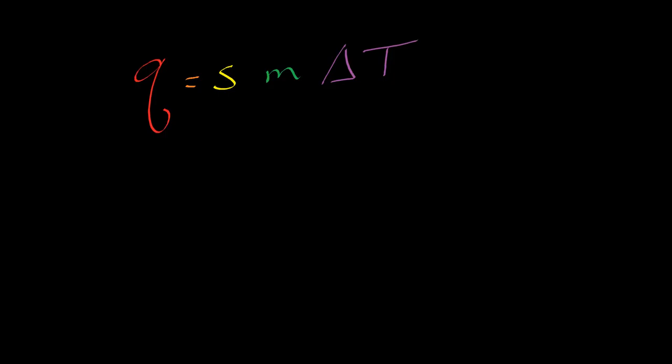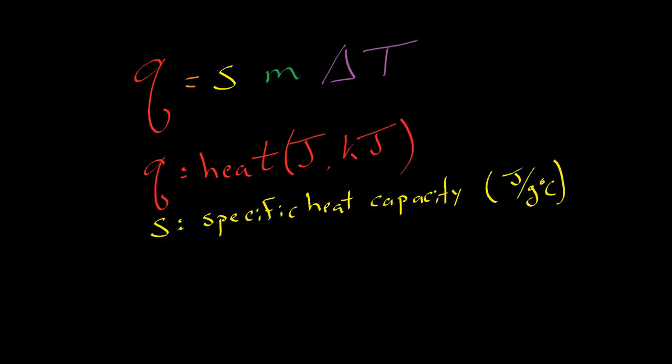First, we're going to have to explain this formula up top. Q equals SM delta T. It is fairly straightforward. Q just means heat. It's our old friend, heat. It's going to be measured in joules or kilojoules. That's the thing you won't be able to measure directly. You will be able to measure temperature, not Q. We're usually looking to find Q.